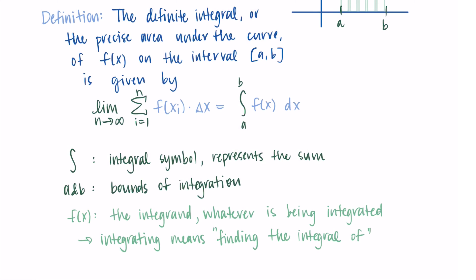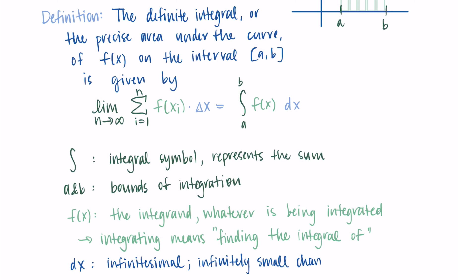I consider integrating the comparison to doing the derivative, which is differentiating — this is integrating, taking the integral of. The f of x corresponds to the f of x sub i's in the Riemann sum, because we're taking the function values — the outputs of the function — since those are the heights of each rectangle. Then the dx is called an infinitesimal, and it represents an infinitely small change in x. As we take an infinite number of rectangles, the width of each rectangle becomes infinitely small, so the delta x becomes a dx. Here the dx corresponds to the delta x in the Riemann sum.